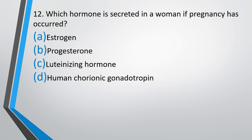Question number 12. Which hormone is secreted by women if pregnancy has occurred? Estrogen, progesterone, luteinizing hormone, or human chorionic gonadotrophin? The correct answer is option D — human chorionic gonadotrophin.